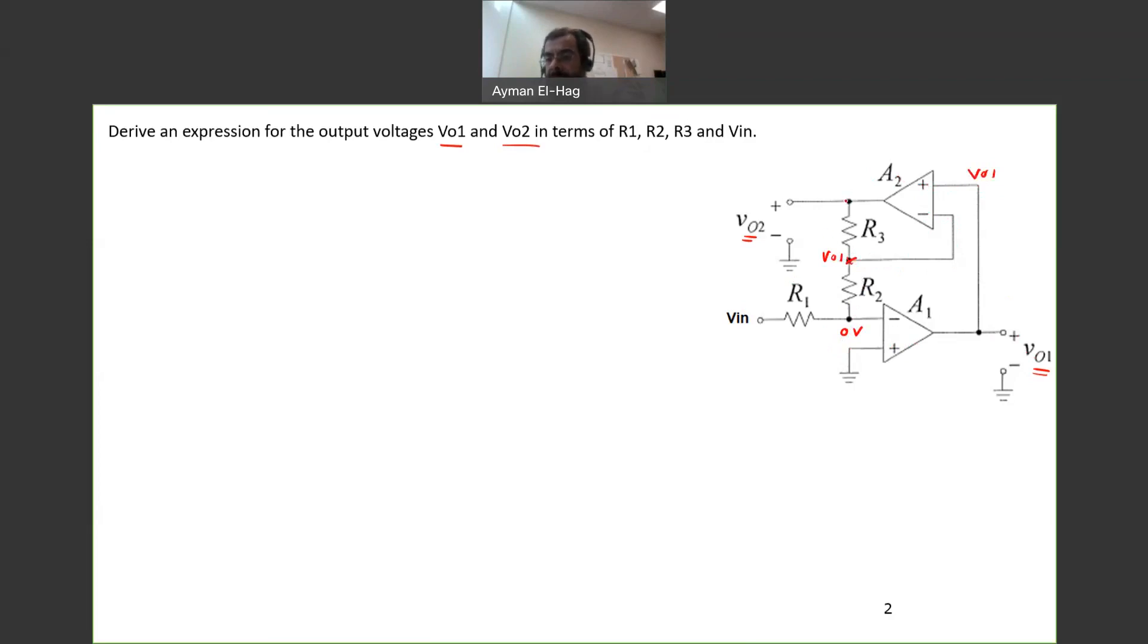This is your VO2. This is Vn. So now we assigned either a variable or a value to each node in the op-amp.